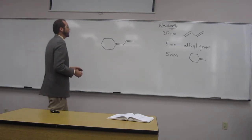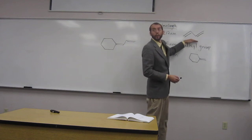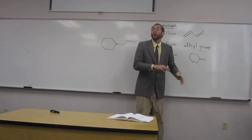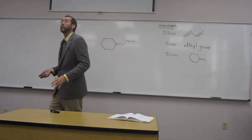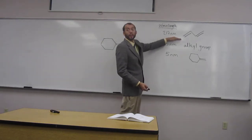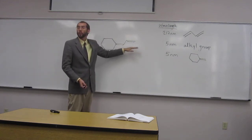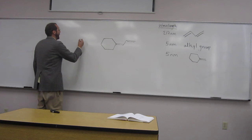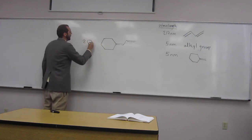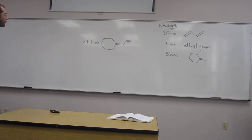The first thing to notice is this conjugated double bond system. It's a non-cyclic conjugated double bond, and with that it starts at 217 nanometers. We have that situation here, so we can start our problem at 217 nanometers. That's the beginning wavelength of this molecule.